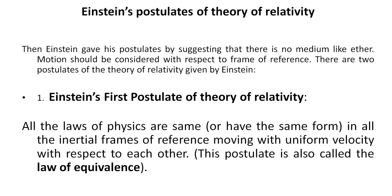Then came the famous postulates of theory of relativity, popularly known as Einstein's postulates of theory of relativity. Einstein gave his postulates by suggesting that there is no medium like ether, and that motion should be considered with respect to a frame of reference. There are two postulates of theory of relativity given by Einstein.